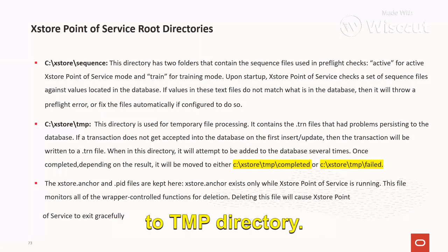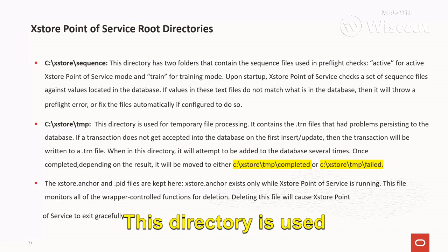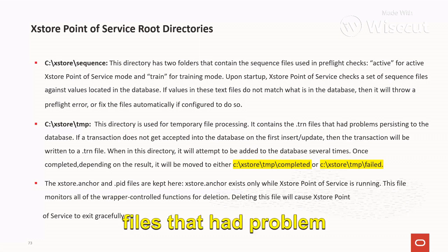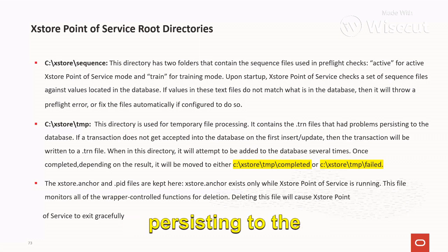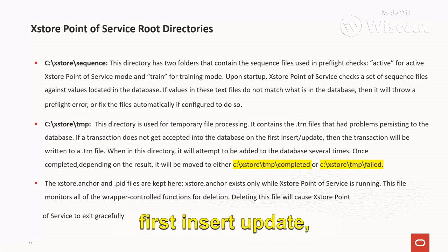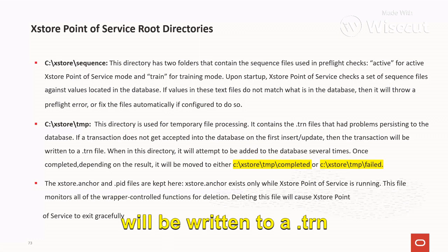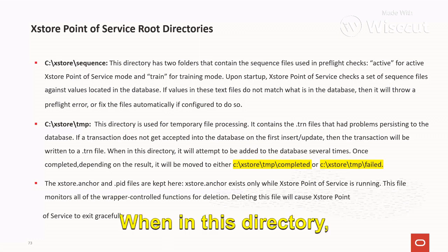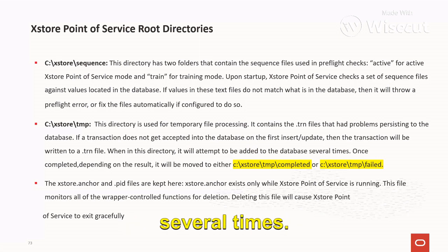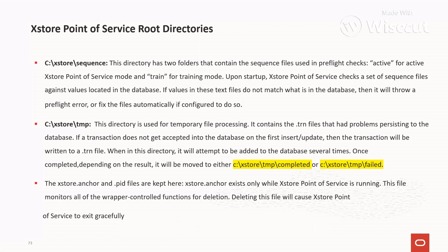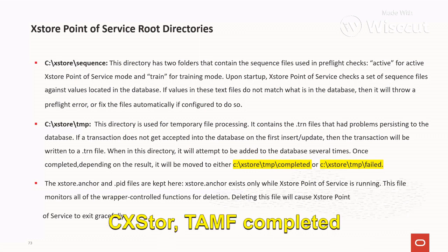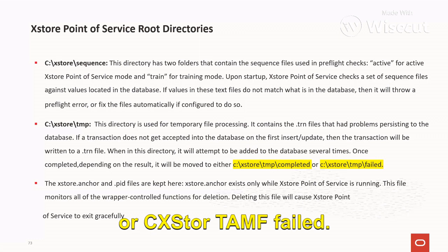Another is C:\AccessStore\tmp directory. This directory is used for temporary file processing. It contains .trn files that had problems persisting to the database. If a transaction doesn't get accepted into the database on the first insert or update, the transaction will be written to a .trn file. While in this directory it will attempt to be added to the database several times. Once completed, depending on the result, it will be moved to either C:\AccessStore\tmp\completed or C:\AccessStore\tmp\failed.